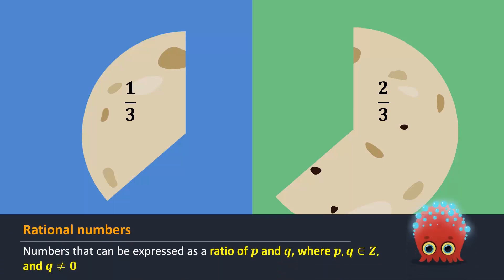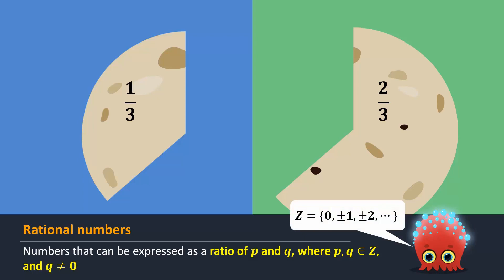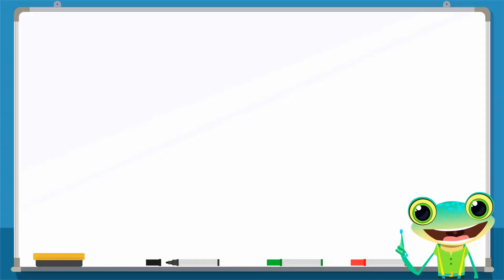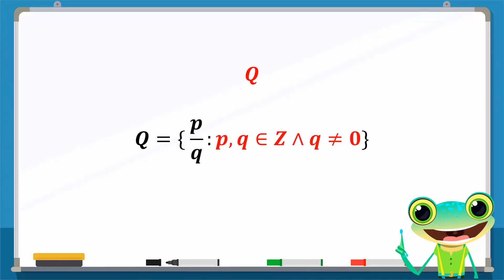Numbers that can be expressed as a ratio of P and Q, where P and Q are integers and Q is not zero, are called rational numbers. Recall that the set of integers is an infinite set containing all the odd and even numbers. So, the numbers 1/3 and 2/3 are called rational numbers. The set of rational numbers is denoted by the capital letter Q. The set builder form is written as Q = {P/Q | P and Q are integers and Q is not equal to zero}.